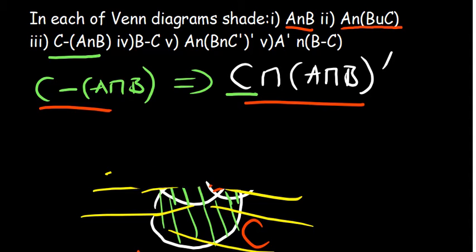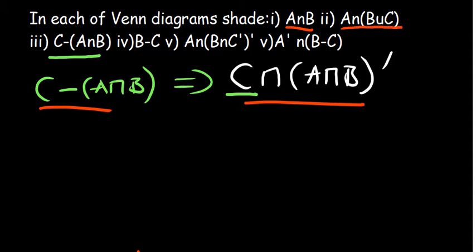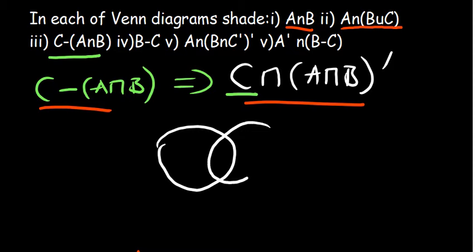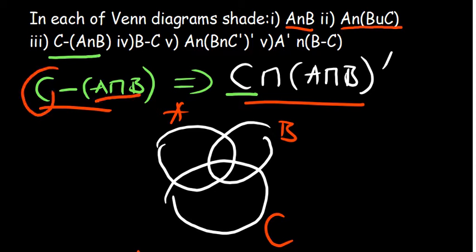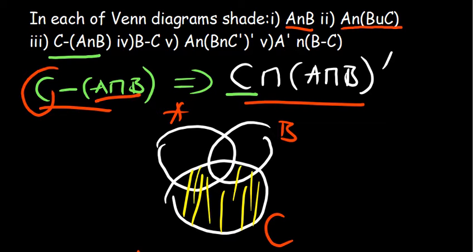Now let's represent it on the Venn diagram in summary. We have our A, B, and C. When we say C minus A intersection B, it means the region of C without the intersection of A and B. The intersection of A and B is this region, so we are excluding that from C, meaning that what we remain with is the region shown here. We are only excluding the intersection of A and B. So you've shaded C minus A intersection B.